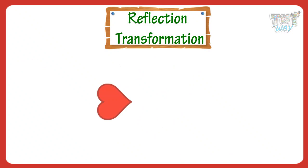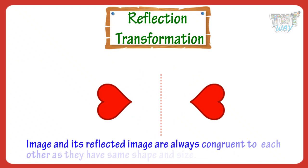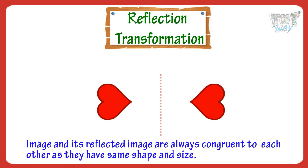A figure and its reflected image are always congruent to each other. That is, they have the same shape as well as the same size. A figure and its reflected image are congruent but face in opposite directions. Here are examples.